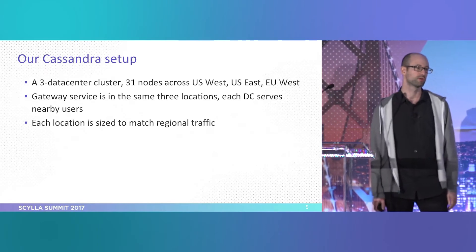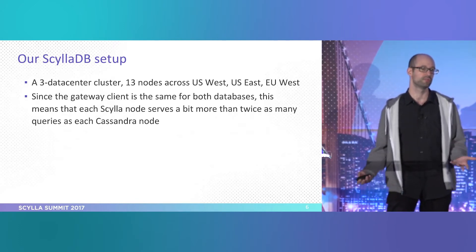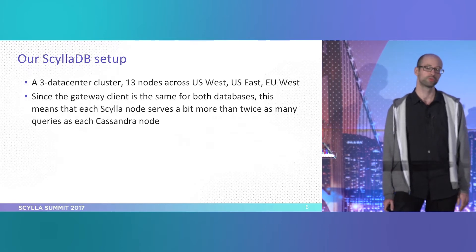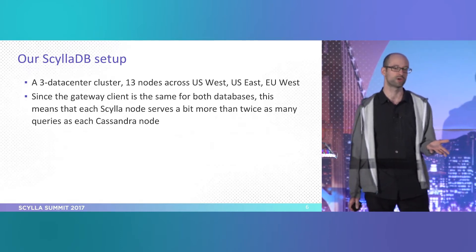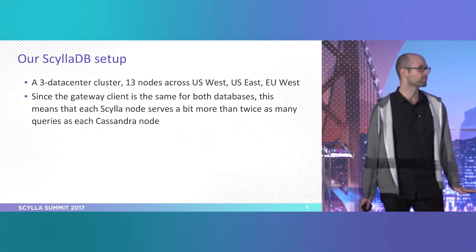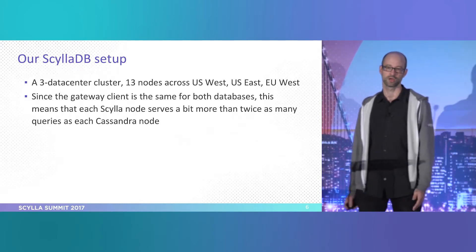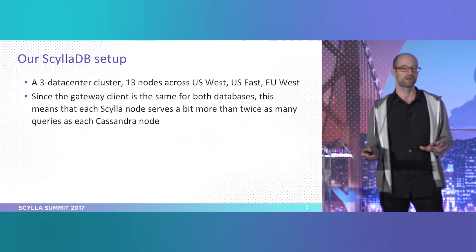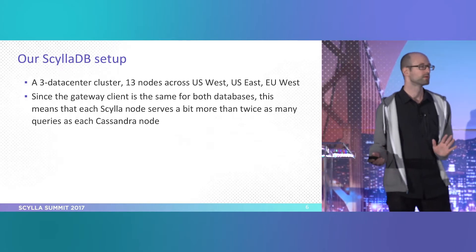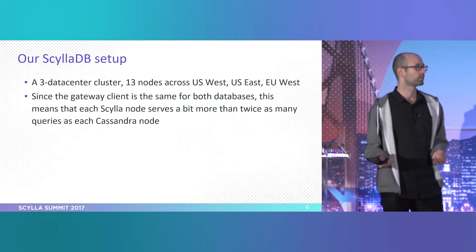So we tried Scylla, which seemed natural given that it's supposed to be fully compatible with Cassandra — meaning the transition would be easy. We could just put it where Cassandra was and everything would keep working. So far that's been true; we managed to start switching without rewriting any part of our stack. It turns out we're able to serve the same amount of requests with about half the hardware — 13 nodes currently versus 30 for Cassandra. Even if Scylla had no other qualities, it would already save us from buying or renting a lot of hardware.